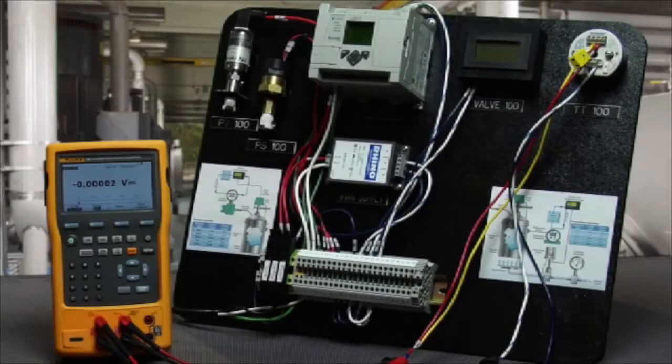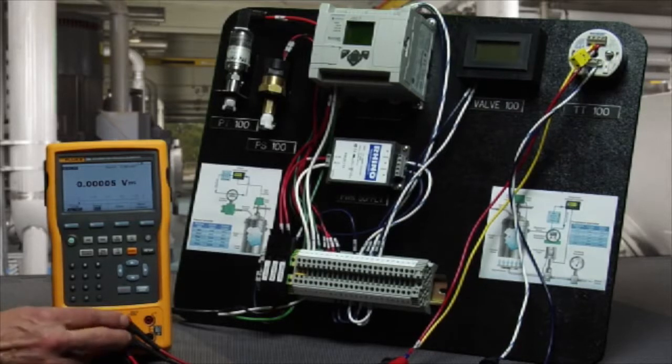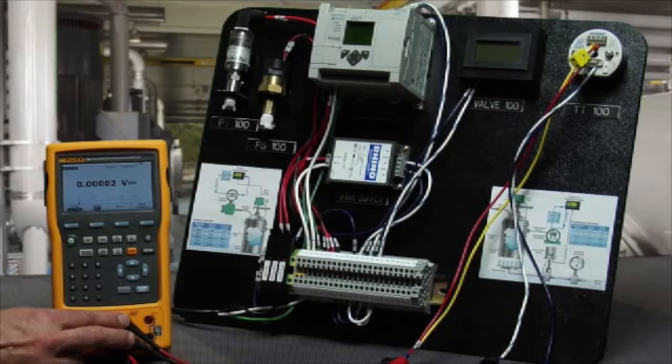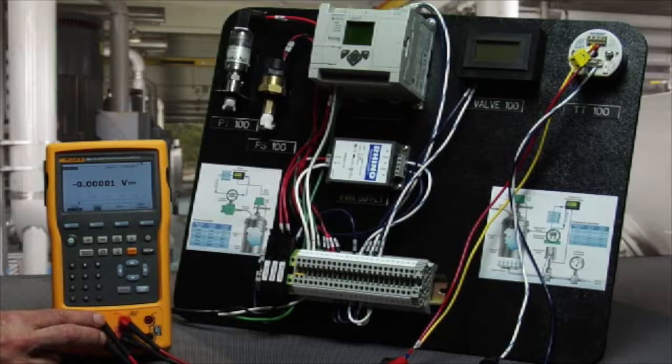We're going to test a Rosemount HeartSmart Transmitter configured with an RTD input. We're going to measure the milliamp signal with the Fluke 754 and power it with a loop power supply. We're going to simulate a PT100385 RTD while simultaneously measuring the milliamp output.